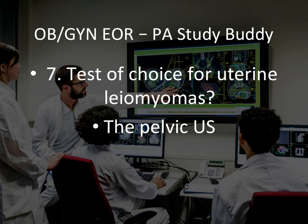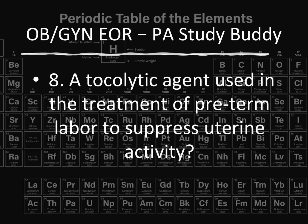The most commonly affected race with leiomyomas is African-American females. They'll tell you this is an African-American female who comes in with pelvic pain and you figure out it's a fibroid — they'll ask what's the next best test, and you answer pelvic ultrasound. Question 8: A tocolytic agent used in the treatment of preterm labor to suppress uterine activity — that would be magnesium sulfate.